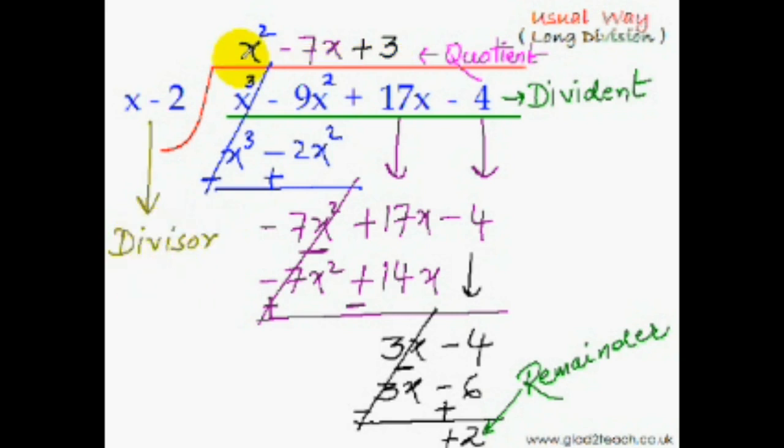Now it is interesting to note how the powers of x are gradually reducing in the quotient or the answer. See, here it was x², here it became x to power 1, and here it disappeared completely. That means it must have become x to power 0.